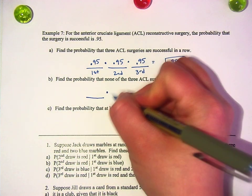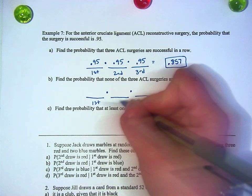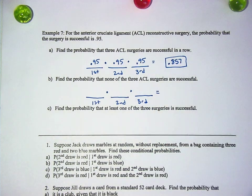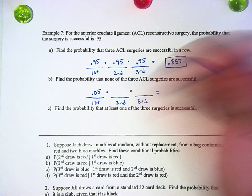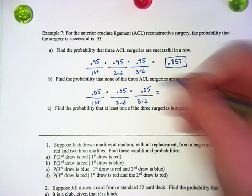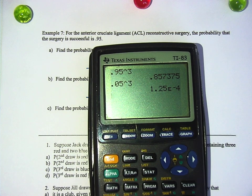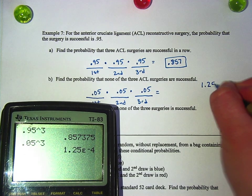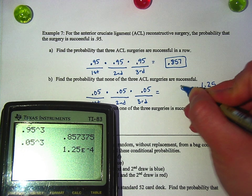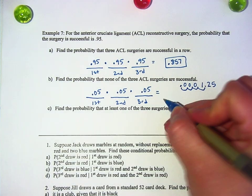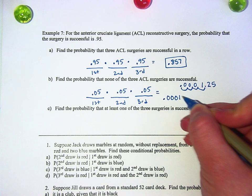What's the probability that none of them are successful? What's the probability that a surgery is not successful? 5% — 0.05. All of them have to be unsuccessful, so I'm going to write down three 0.05s in a row. When I put that in my calculator I get 1.25e to the negative 4. Can you remind me what that means? Since this is a negative 4, you move the decimal four places over to the left. So if it was 1.25, you go 1, 2, 3, 4 — put your point — so that is 0.000125.